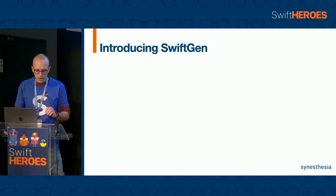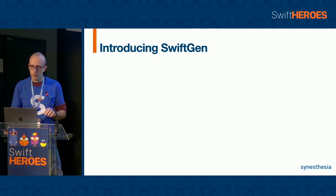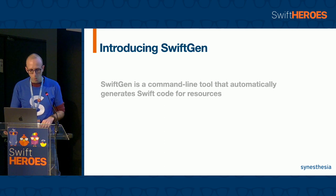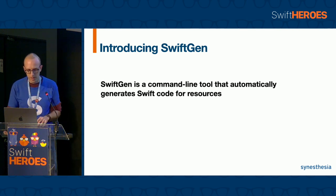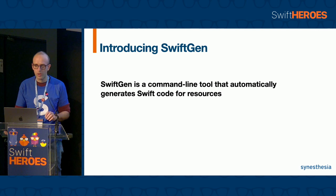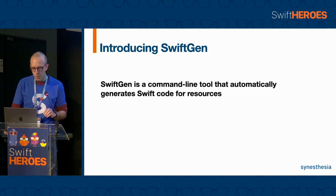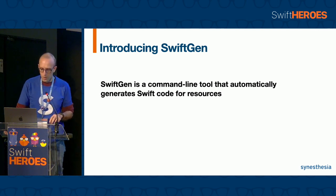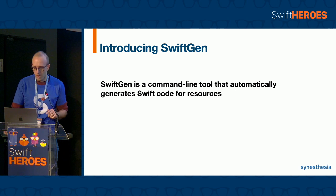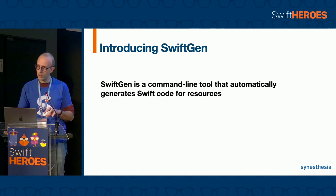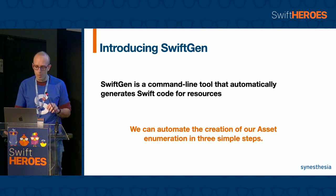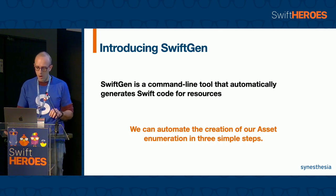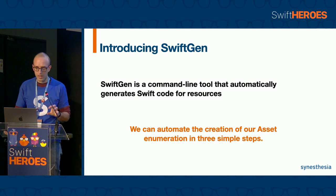In order to further improve this approach, we can introduce SwiftGen. SwiftGen is a command line tool that automatically generates Swift code for resources. I don't want to go into too much detail, also because the next talk will be about XcodeGen, a very similar tool to SwiftGen. But I want to show you how to create our asset enumeration automatically in three easy steps.